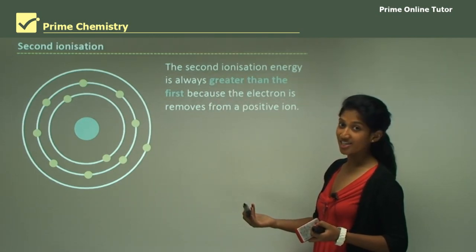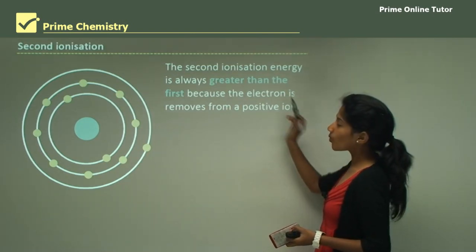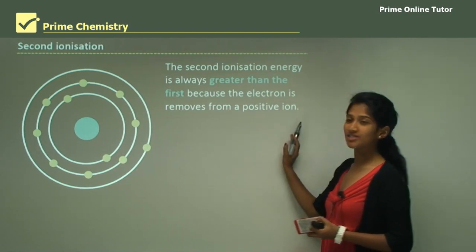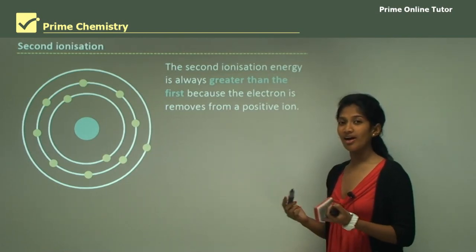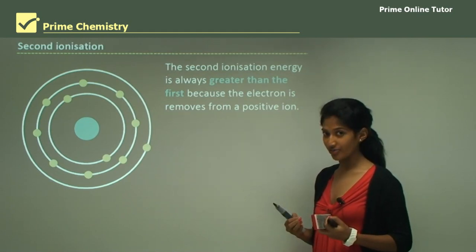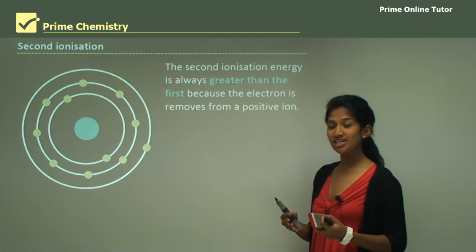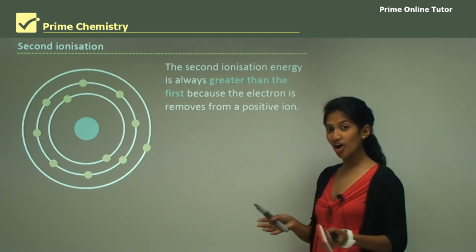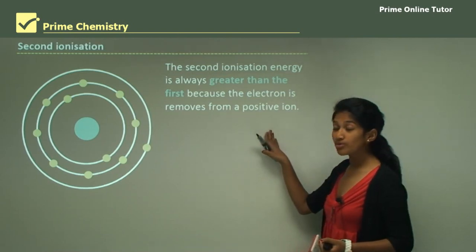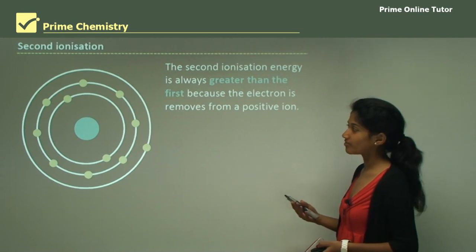The second ionization energy is the amount of energy needed to remove the second electron, and it is always greater than the first. This is because the electron is now being removed from a positive ion — the atom has already lost one electron and become positively charged, so removing another electron from that positive charge requires even greater energy.